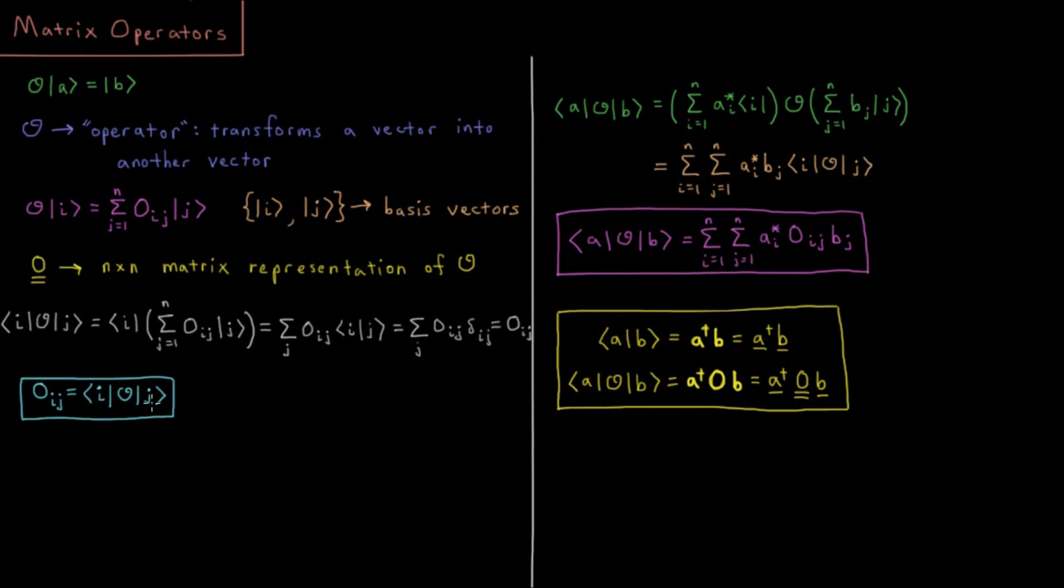So all of these are for basis vectors. What if instead we want to see the result of some given bra vector A with the operator O acting on ket vector B. Before we were looking at basis vectors that form an orthonormal set. But in general, we want to know the effect of the operator acting on any vector.